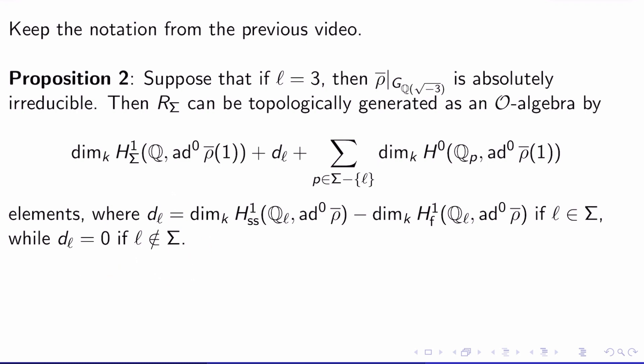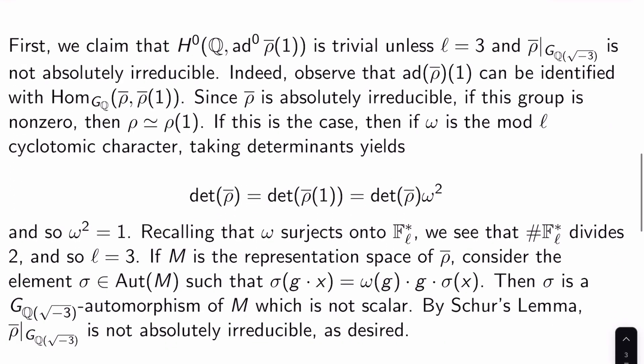So let's prove this. First, we claim that H^0(Q, ad^0 ρ̄(1)) is trivial unless l is 3 and ρ̄ restricted to the Galois group of Q adjoin root negative 3 is not absolutely irreducible. Indeed, to see this, just observe that ad^0 ρ̄(1) can be identified with G_Q homomorphisms from ρ̄ to ρ̄(1). Now, ρ̄ was given to us last video to be absolutely irreducible. So if this group is non-zero, then ρ̄ must be isomorphic to ρ̄(1).